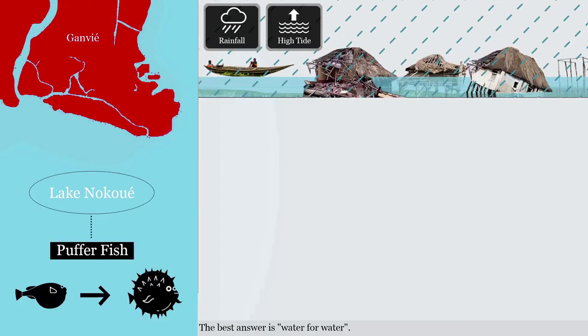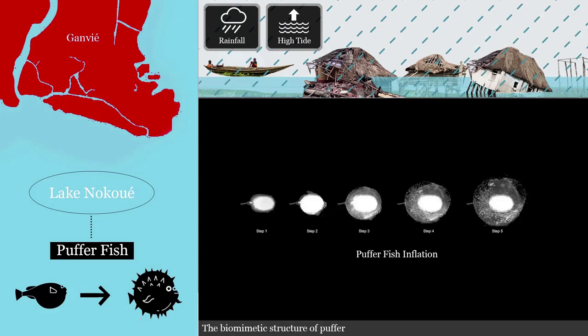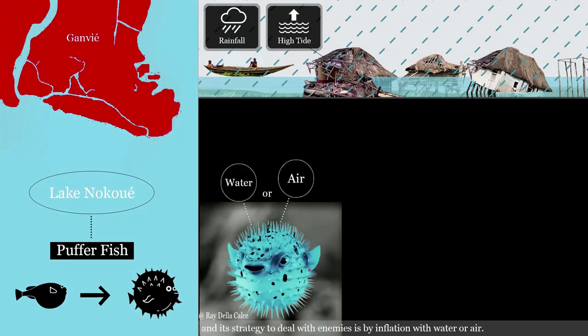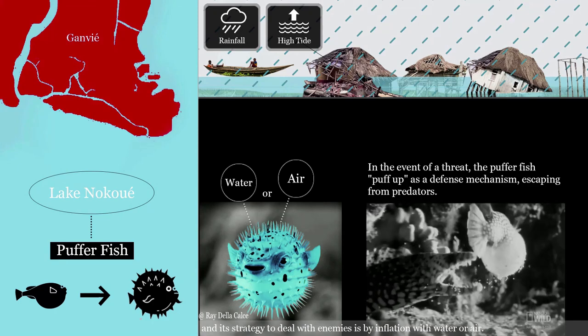The best answer is water for water. The biomimetic structure uses the puffer fish and its strategy to deal with enemies by inflation with water or air.